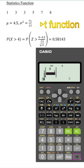We have 1, press equal, 3, equal and so for the rest of the values: 3, 5, 7, 8.